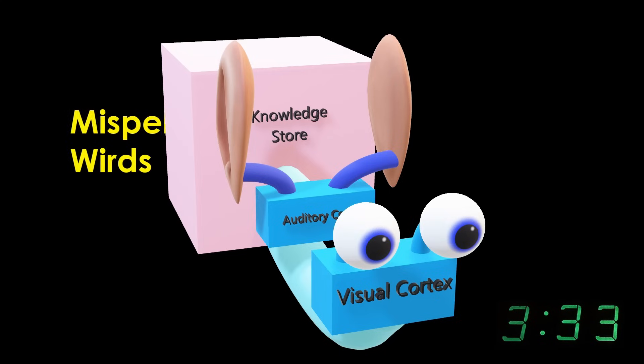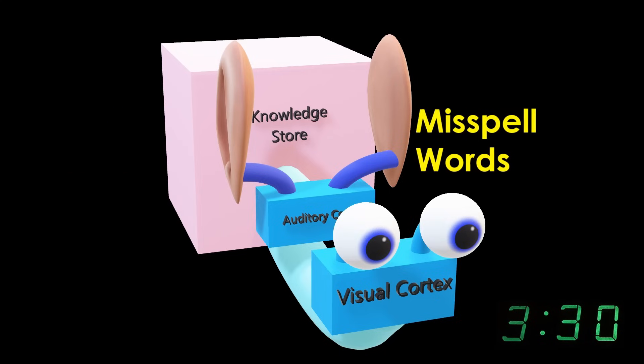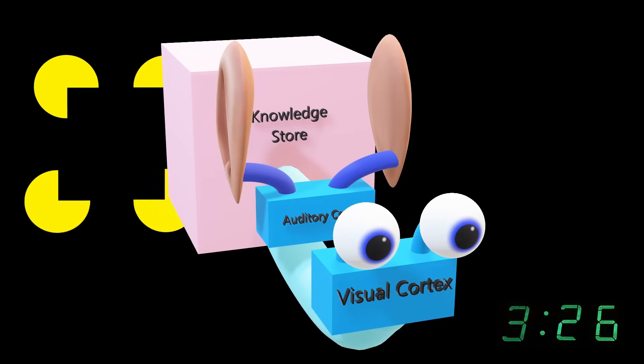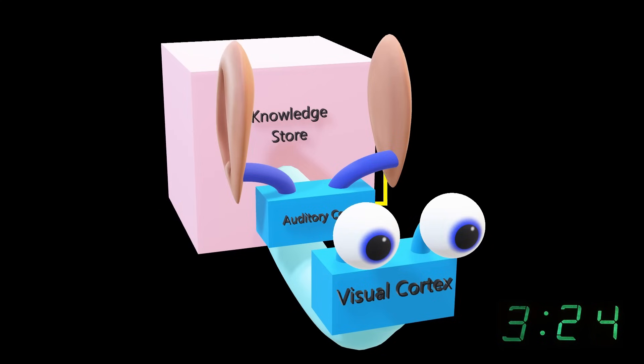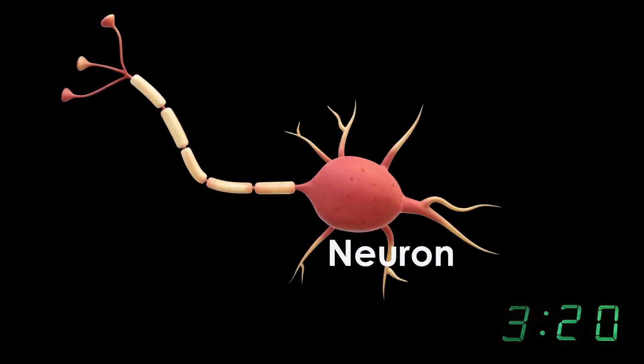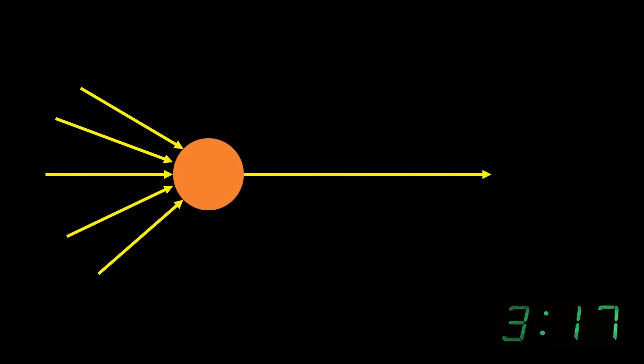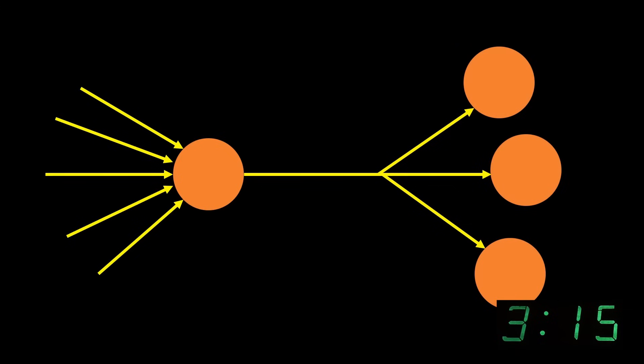Your brain is very good at finding closest matches to input patterns. You can understand people who mispronounce or misspell words, you can recognize an object even if you can see just a part. Individual neurons are good at this too. The more a pattern of inputs matches a pattern of synaptic weights, the more likely the neuron is to fire.